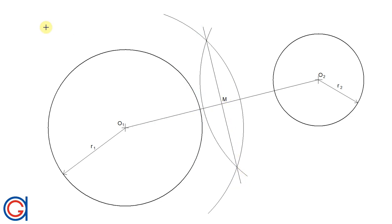Where it cuts the line O1, O2, we find the midpoint M, which is the perpendicular bisector.